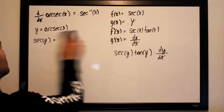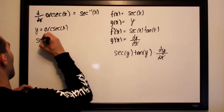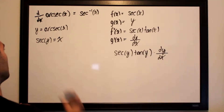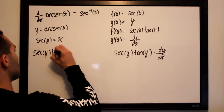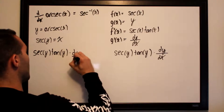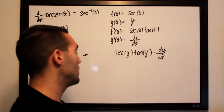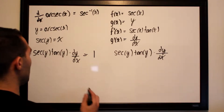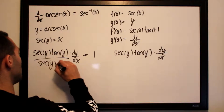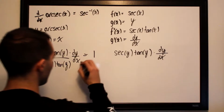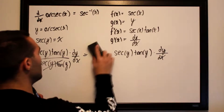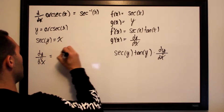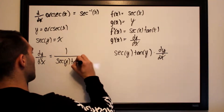Let's rewrite that secant of y equals x since we'll need it later. Our equation becomes: secant of y times tangent of y times dy/dx equals one. To isolate dy/dx, we divide both sides by secant of y times tangent of y. So dy/dx equals one over secant of y times tangent of y.